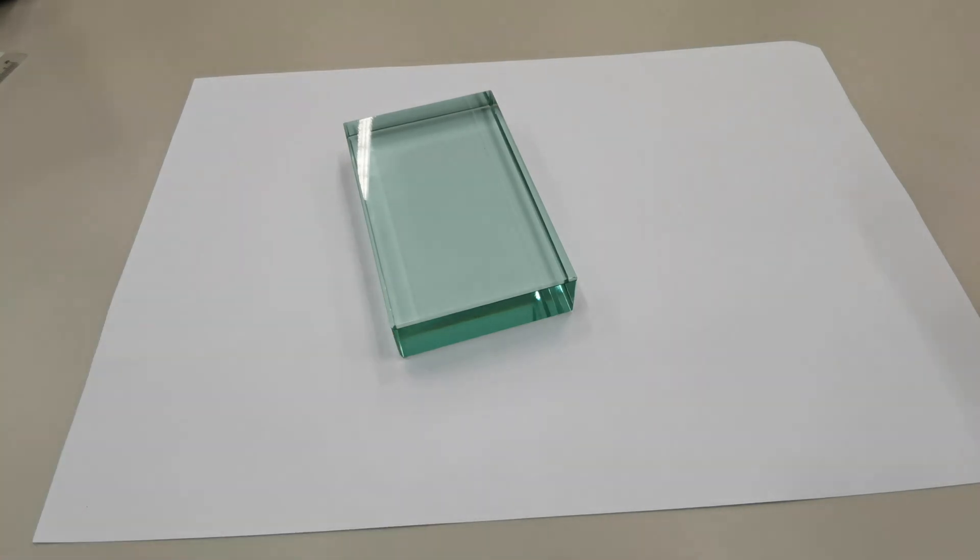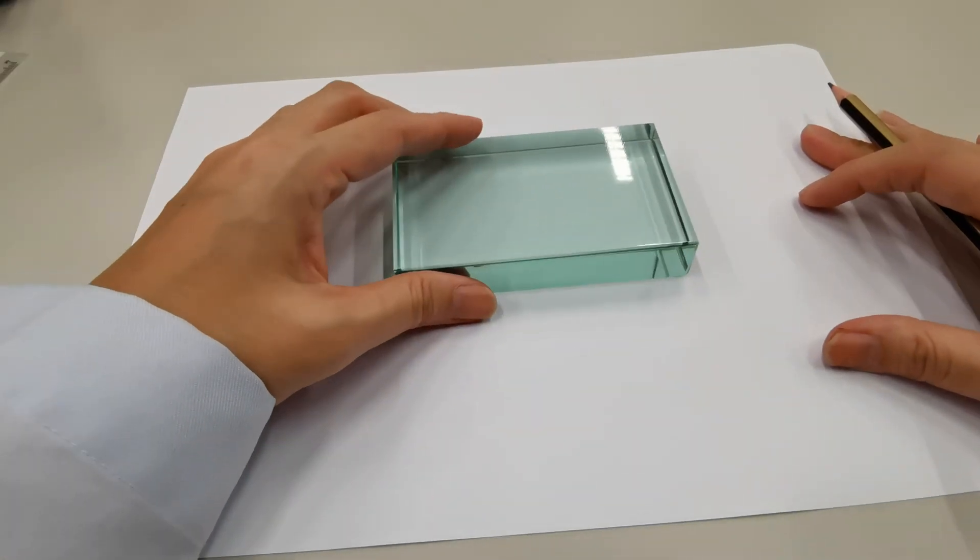We're going to start off first by tracing the glass block on the paper.